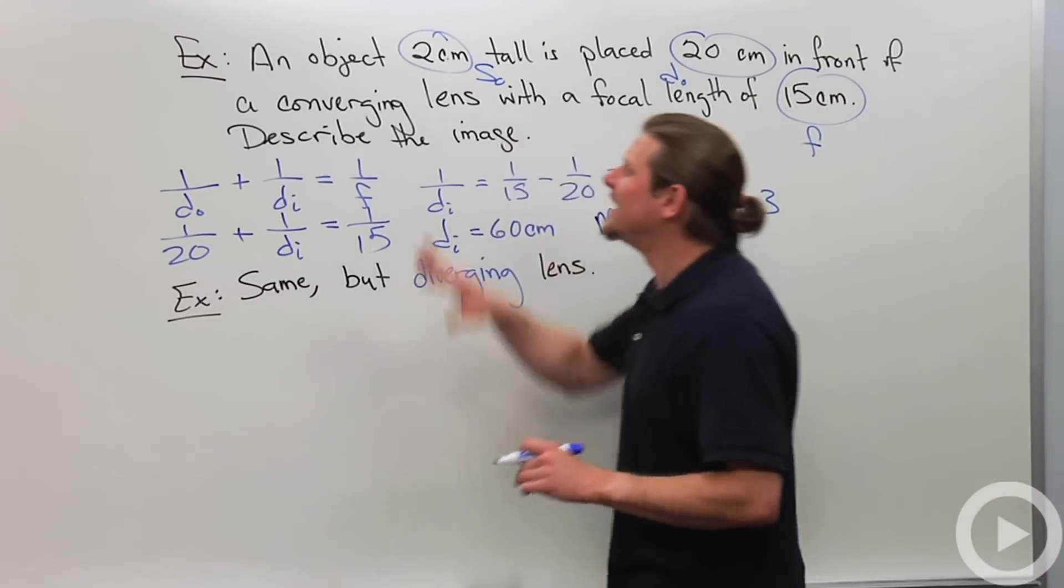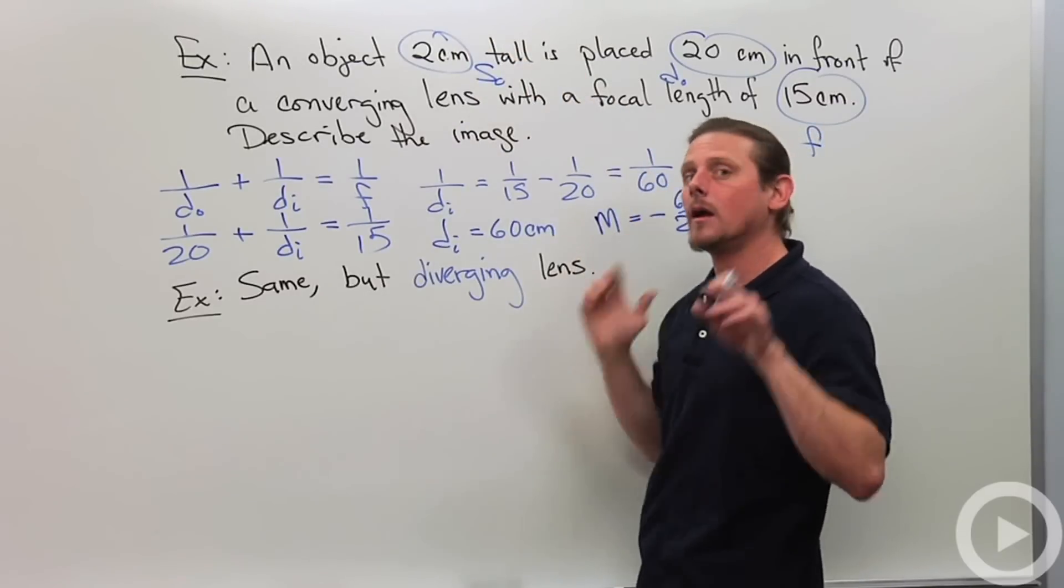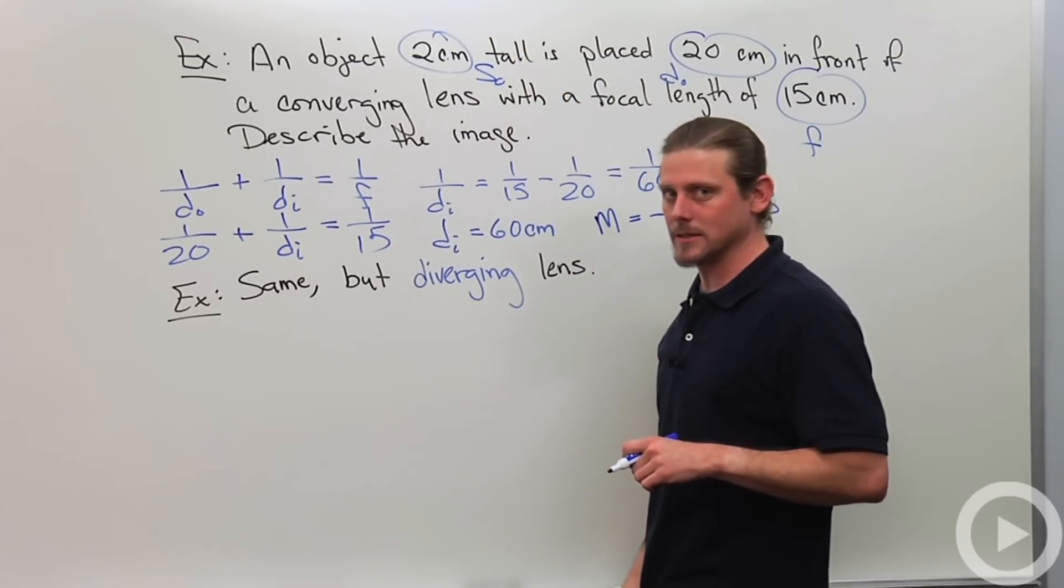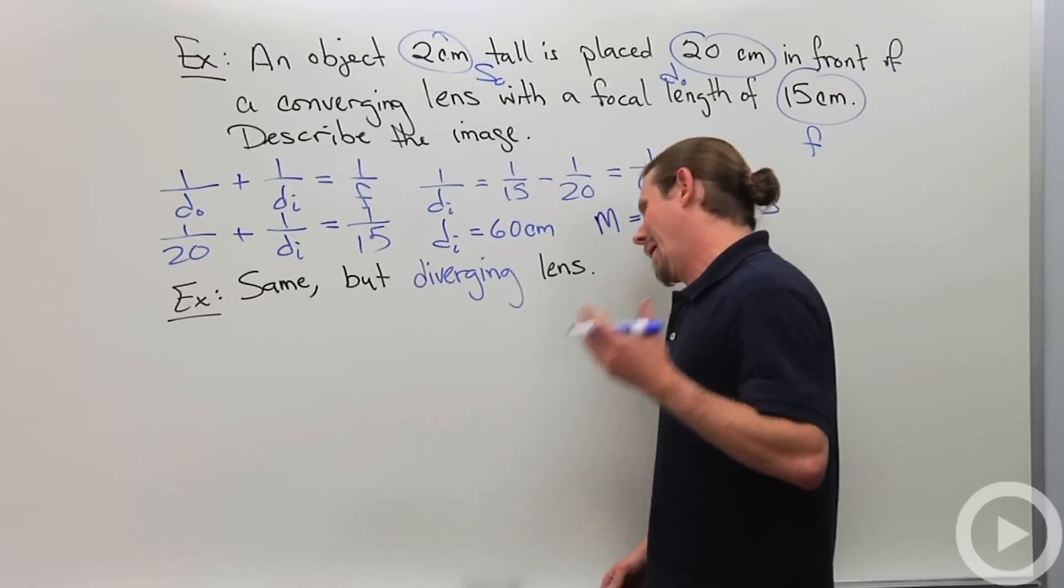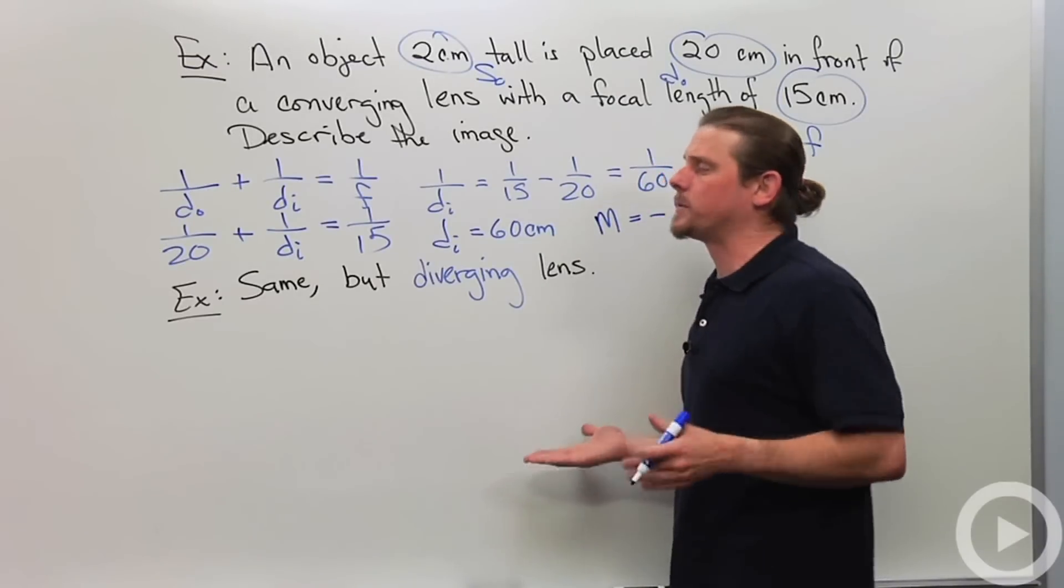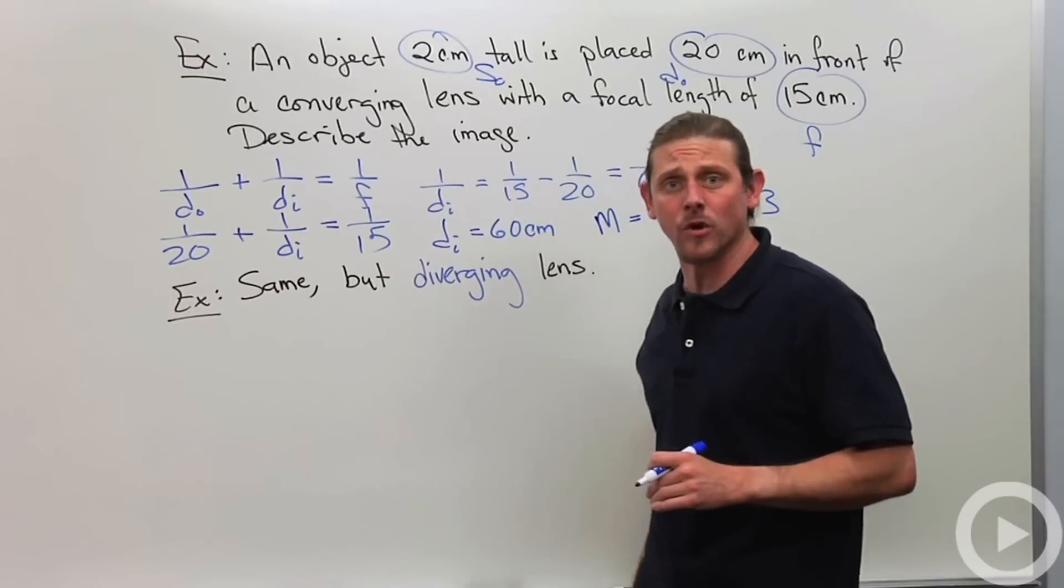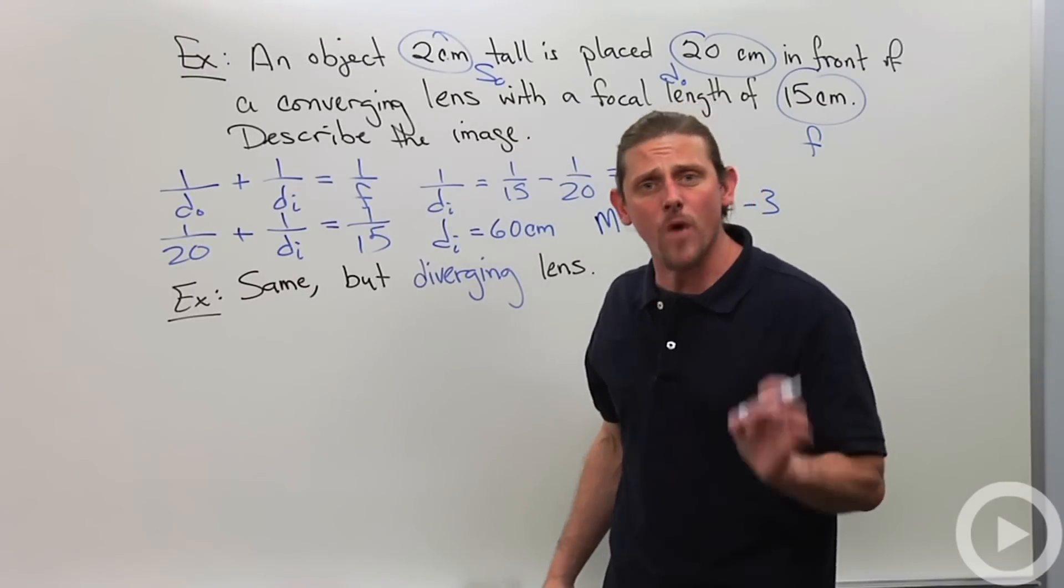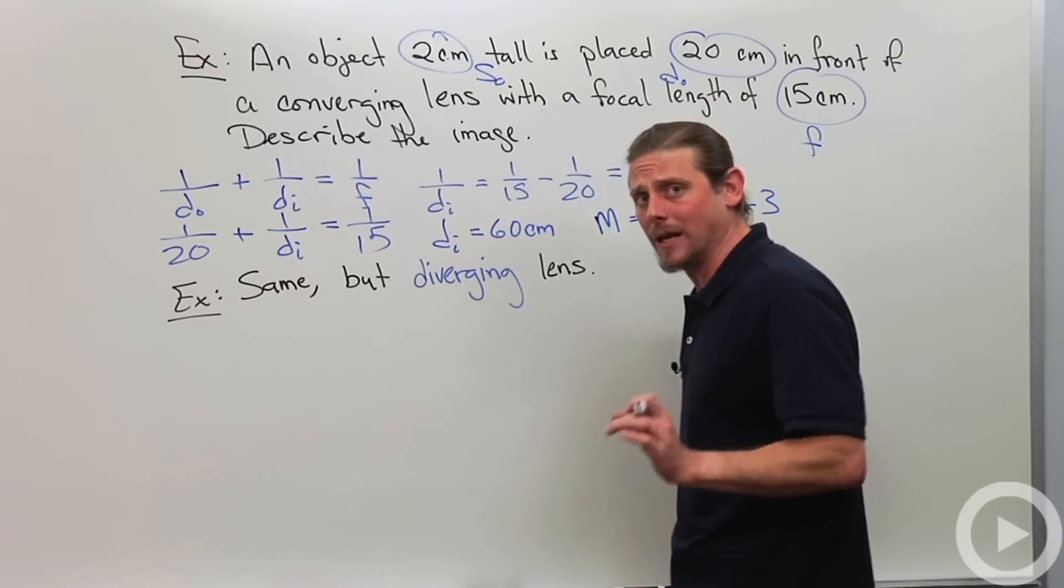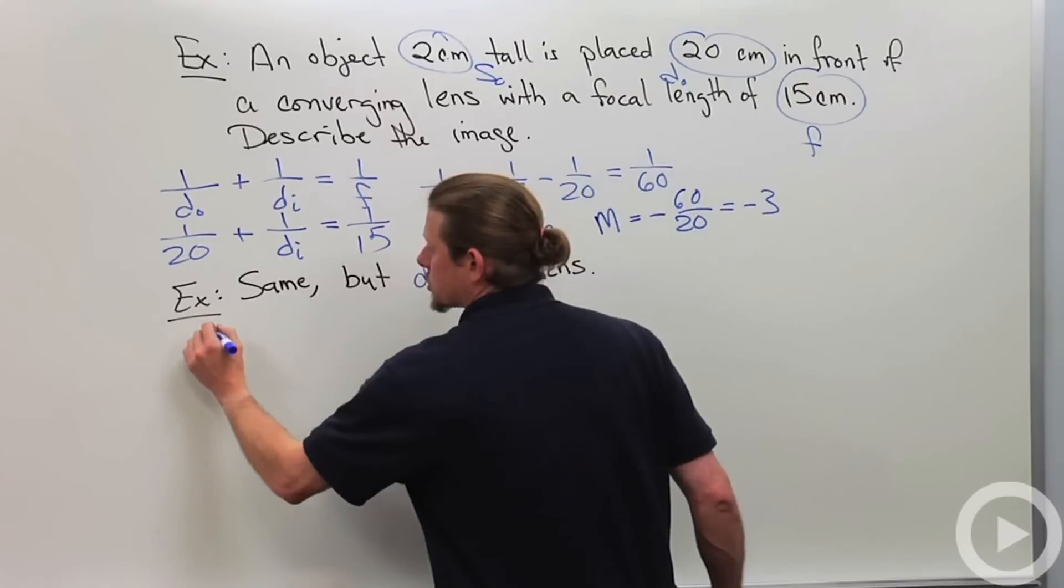The next example is everything's exactly the same, except it's a diverging lens this time, not a converging lens. What's the difference between a converging lens and a diverging lens? The difference is that the focal length should now be taken to be negative.